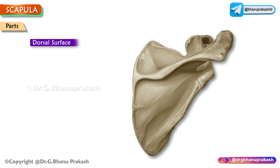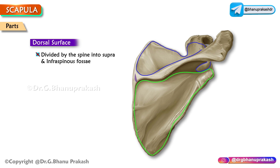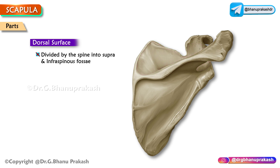The dorsal surface is divided into two halves by a projection known as the spine. The upper, smaller part is known as the supraspinous fossa. The spinoglenoid notch lies between the lateral border of the spine and the dorsal aspect of the scapular neck.